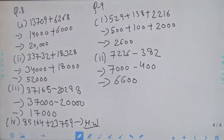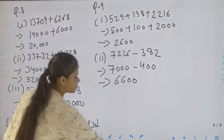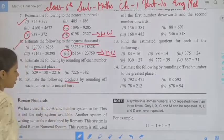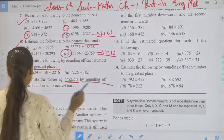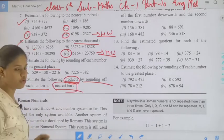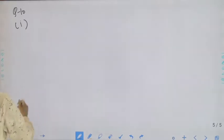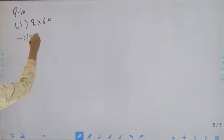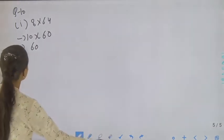Then we will move to question number 10 of Exercise 1.3. Question number 10 — estimated the following products by rounding off each number to the nearest 10, then we have to do multiplication. First part: 8 into 64. Nearest to the 10: 8 rounds up to 10 and 64 rounds to 60. So 10 into 60 it will be 600.